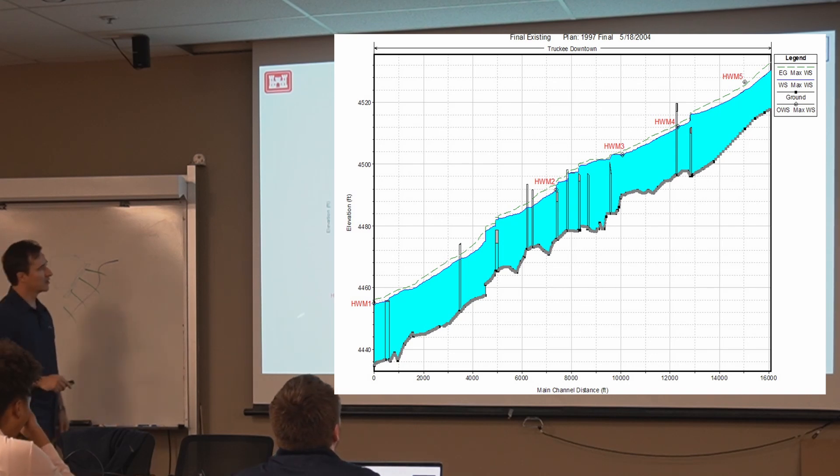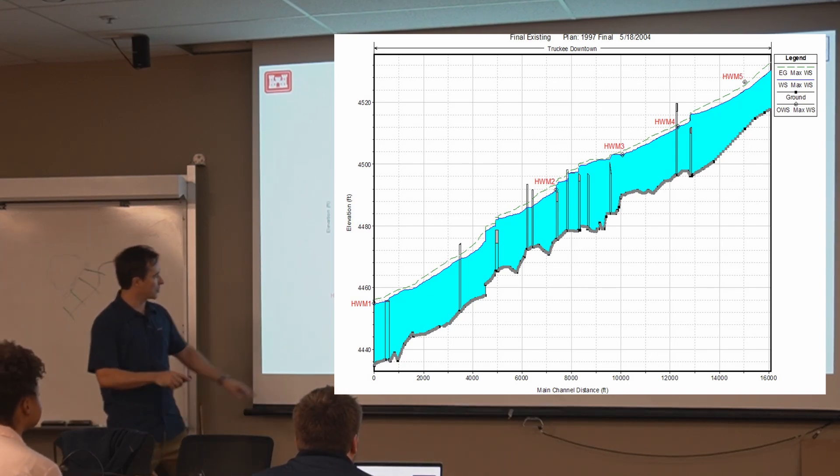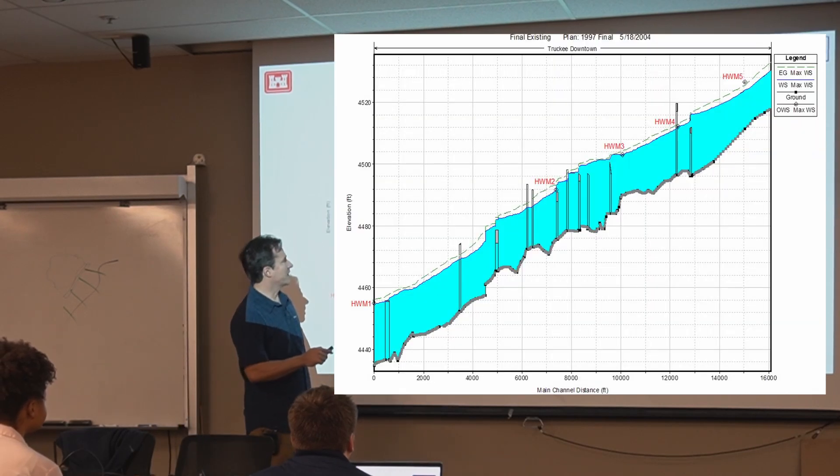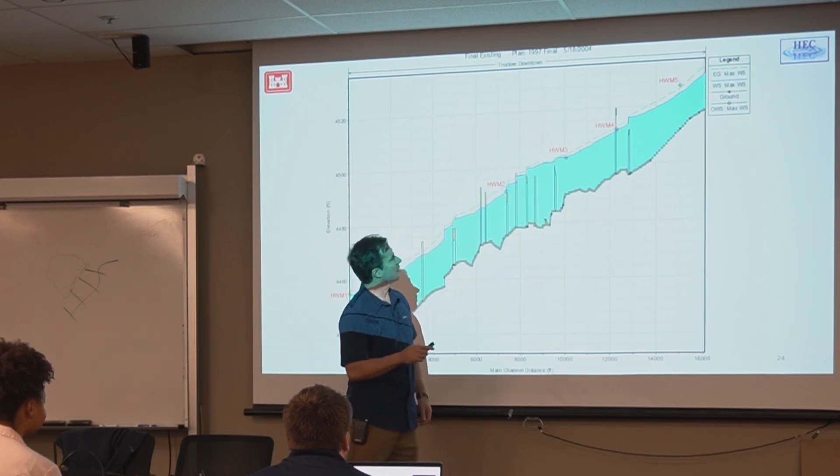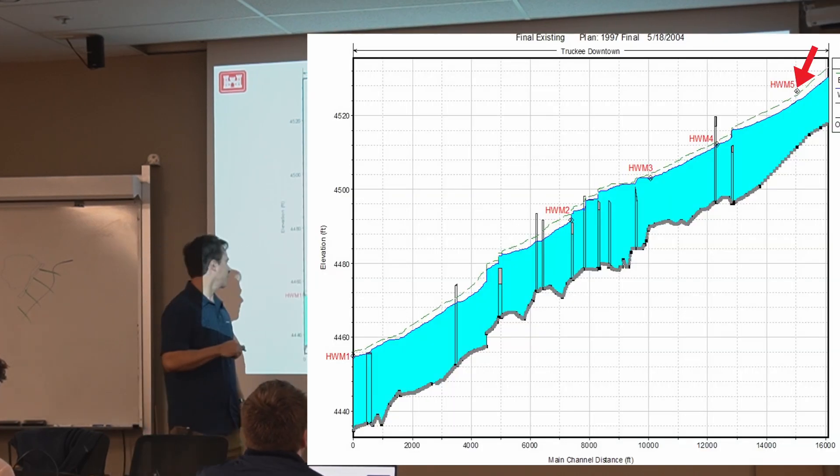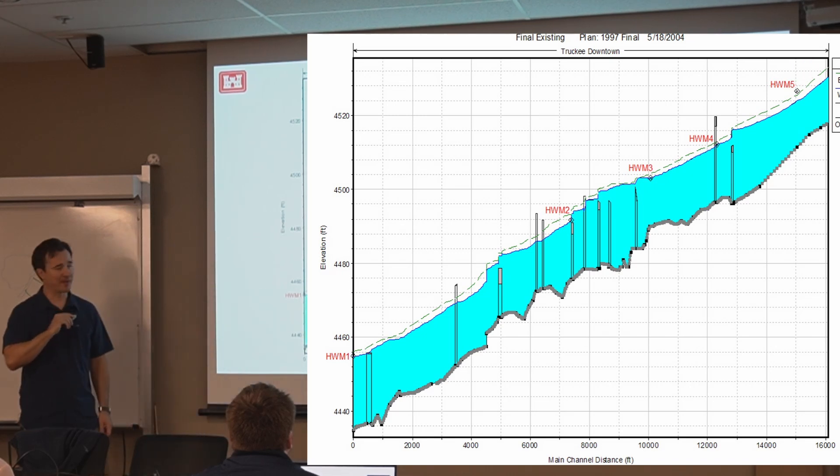This is an example of that. The steady model solution. These are all lateral structures. Well, these are bridges. And the observed data shows up as these diamonds. What do you guys think about this result here? The green line is the energy grade line. If you can't see, it's kind of small for the people back there. But when you're calibrating your model, you're trying to match the water levels. It is a 1D model.